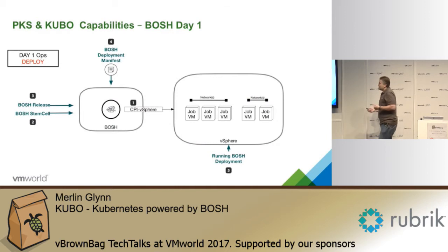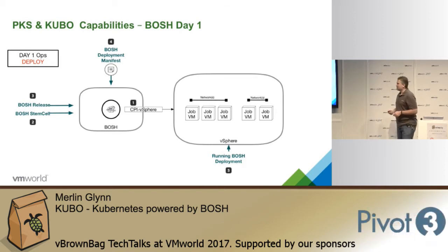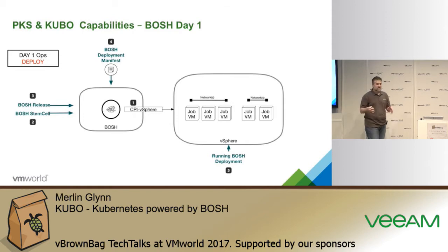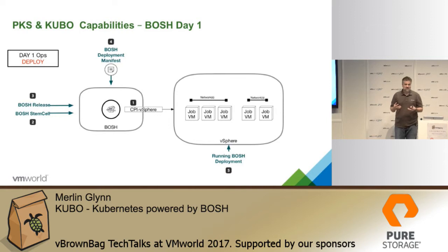So what's BOSH? BOSH is an open source project incepted at VMware, accepted into the Cloud Foundry Foundation with a broad community, largely led by Pivotal. What BOSH does is deploy software. Think of BOSH itself as a management VM that communicates with any given IaaS via something called a CPI — a cloud provider interface. We're using the vSphere CPI.